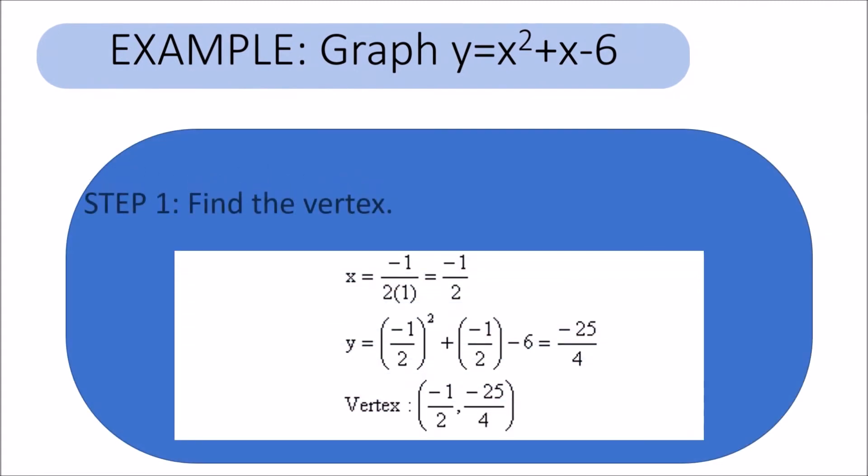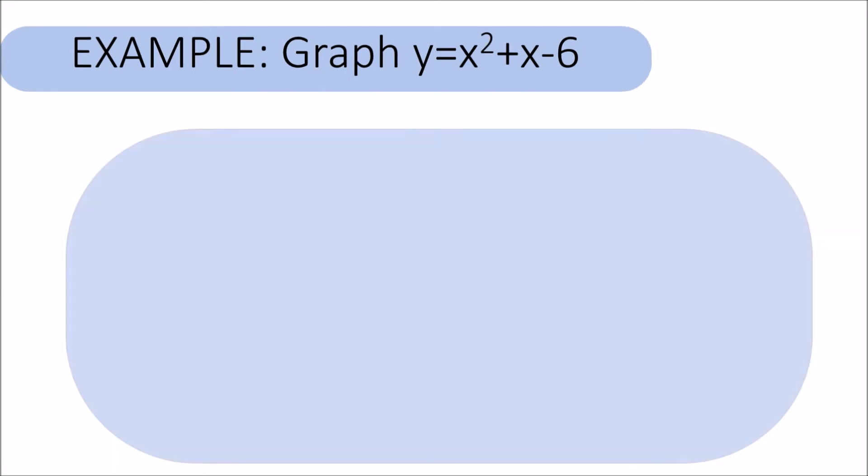For example number 1, graph y = x² + x - 6. Step 1, find the vertex by using the equation x = -b/(2a) and then plugging x into the original equation to find the value of y. In this case, a equals 1 and b equals 1.